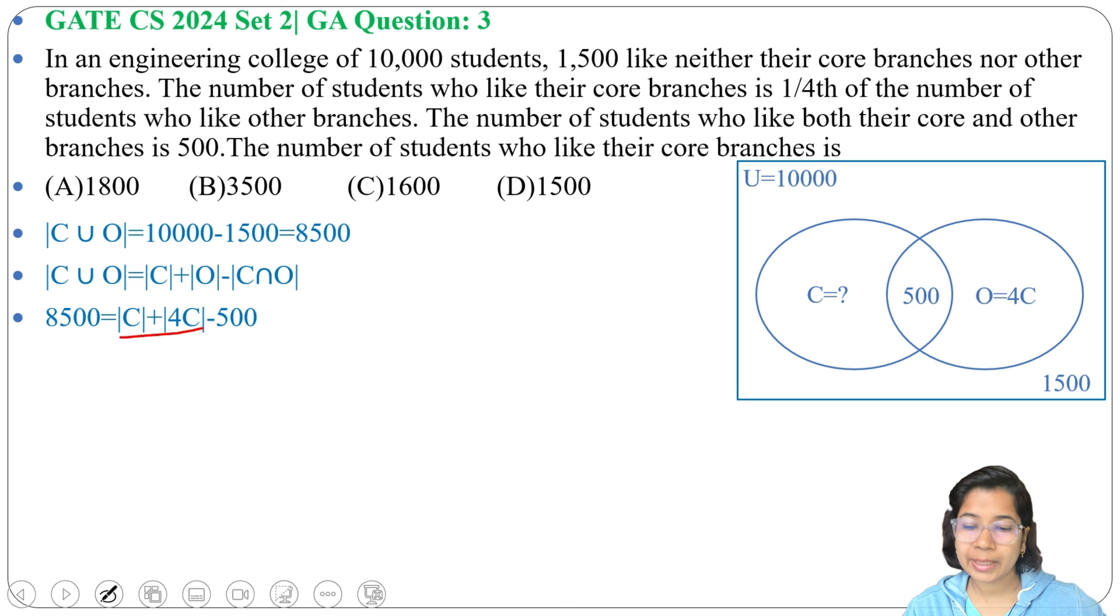C plus 4C is 5C, then this minus 500 will go to the other side: 8,500 plus 500 will be 9,000. So 5C equals to 9,000, C will be 9,000 divided by 5, which is 1,800. So the number of students who like their core branches is 1,800.